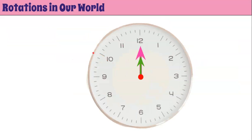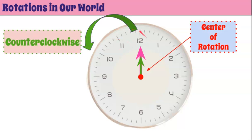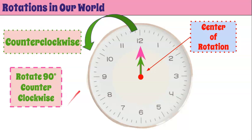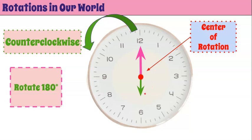Now let's talk about rotations on a clock going counterclockwise, or left around the clock — counter to how a clock moves. The first would be rotating 90 degrees counterclockwise, going left to form that 90-degree angle, noting that rotating 90 degrees counterclockwise is the same as rotating 270 degrees clockwise. Now rotating 180 degrees — even turning two turns to the left ends up in the same place as 180 degrees clockwise.